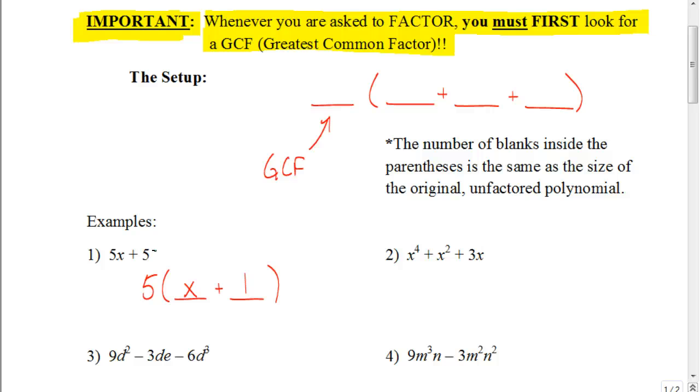Let's look at the next example. I have x to the 4th plus x squared plus 3x. Again, sometimes our GCF is a number, sometimes it's just a variable, sometimes it's both a number and a variable. In this scenario, it's going to be just a variable, because when I look at the numbers, I have a 1x to the 4th, a 1x squared, and a 3x. So I don't have a common factor other than 1 that I can factor out.